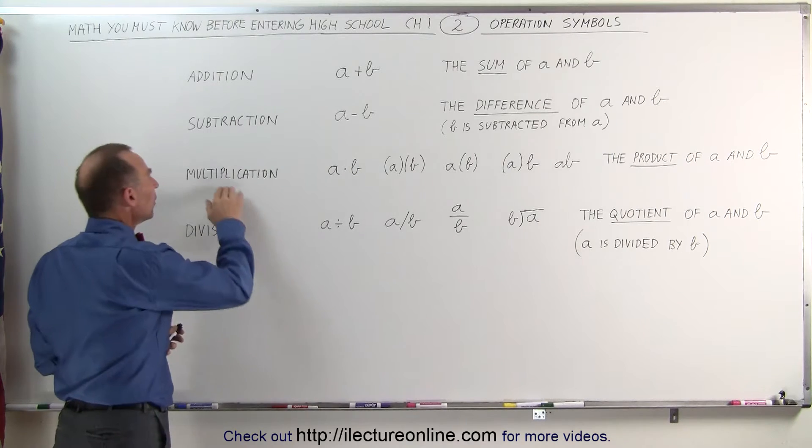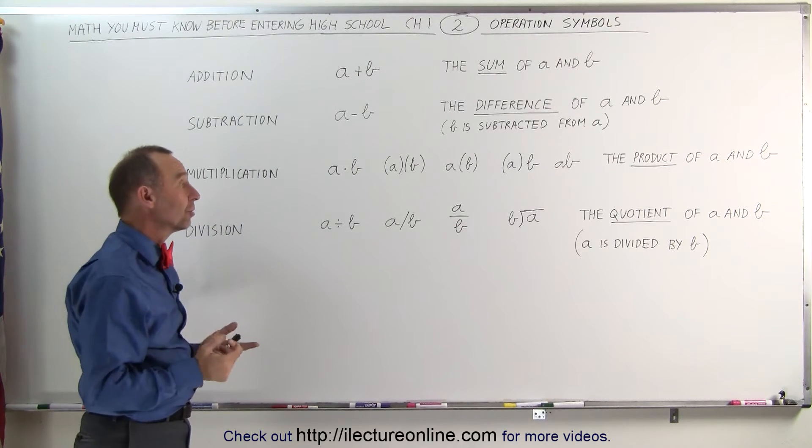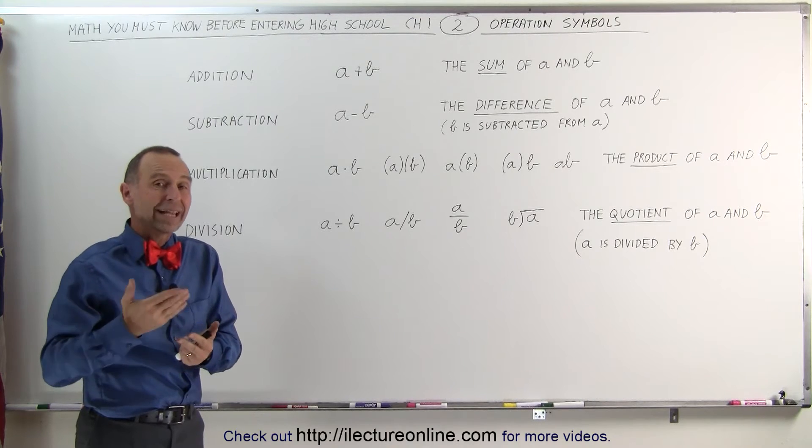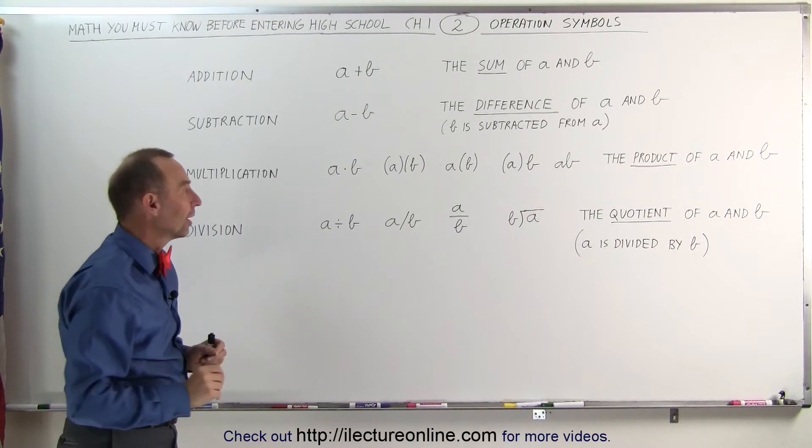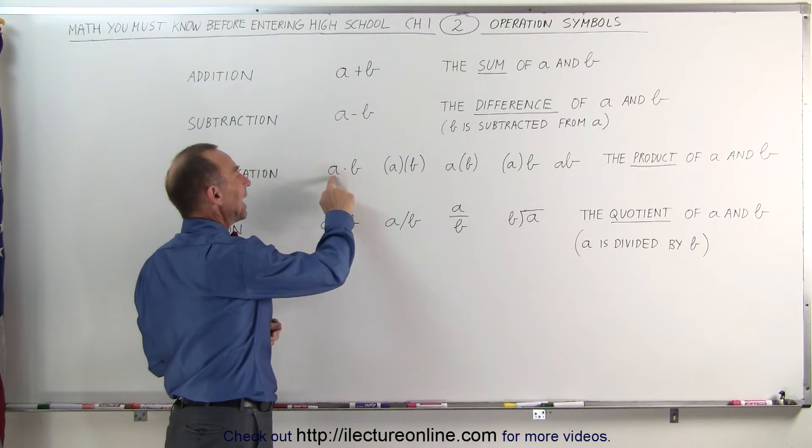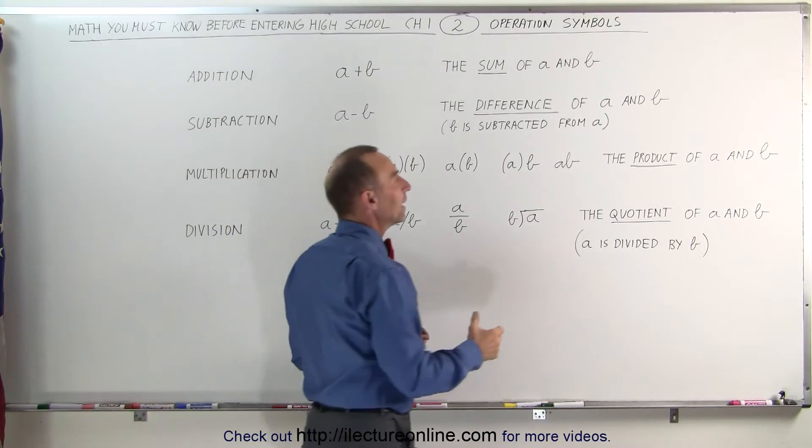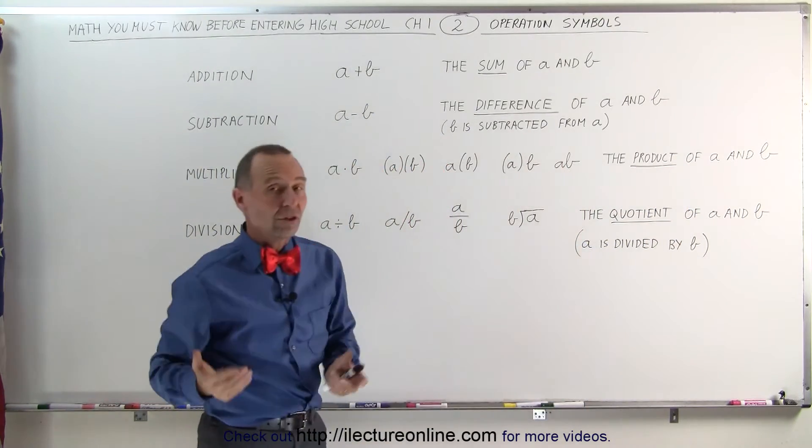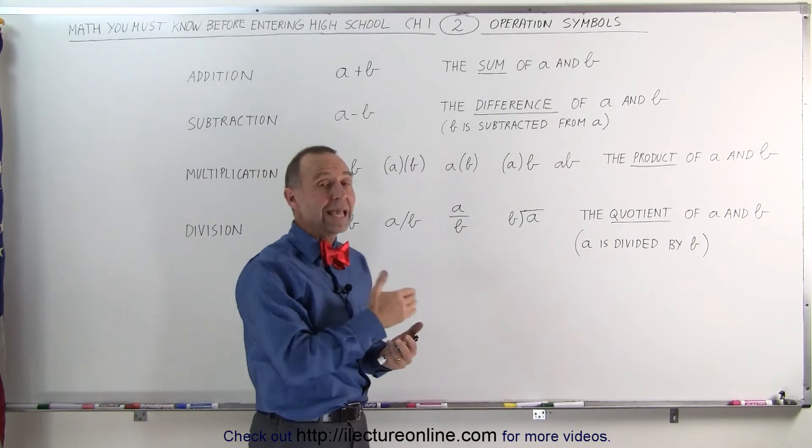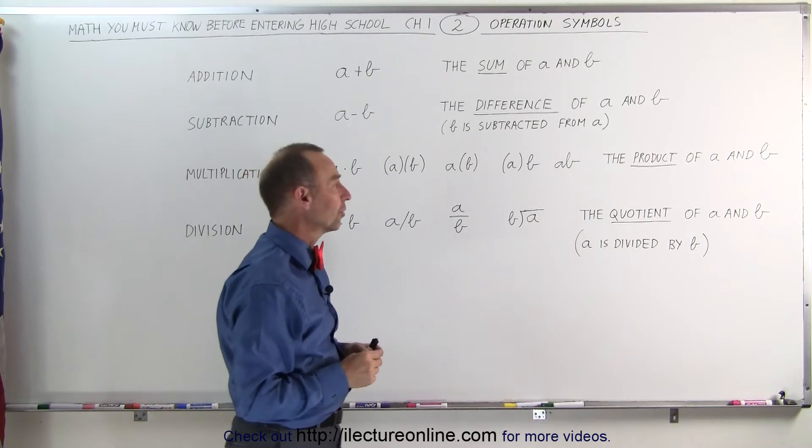When we write the multiplication notice we no longer use the x symbol for multiplication. The reason why we don't is because the letter x is used a lot in algebra so we don't want to confuse things. Instead we use the dot. a dot b means a multiplied with b or we can also say it's the product of a and b. In this case the order doesn't matter. You can say the product of a and b or the product of b and a and you get the exact same result.